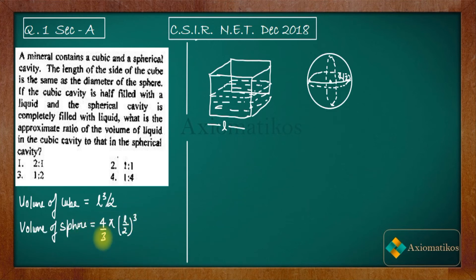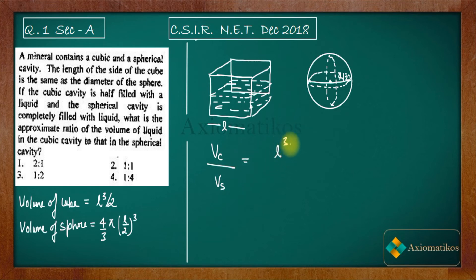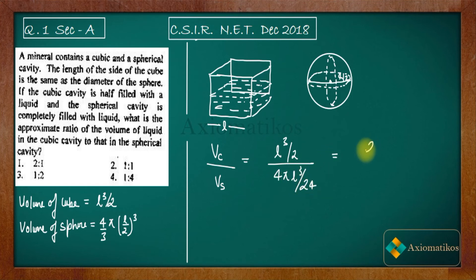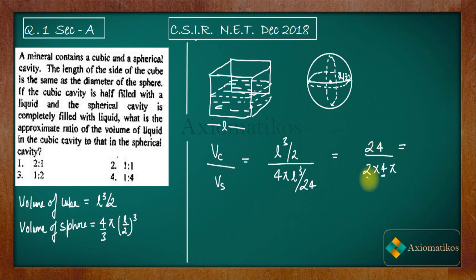We need to find the ratio VC to VS. Let VC be the volume in the cubic cavity and VS be the volume in the spherical cavity. So the ratio is (l³/2) divided by (4π(l/2)³/3). Expanding (l/2)³ gives l³/8, so the denominator becomes 4πl³/24. The l³ terms cancel, giving us 24 divided by (2 × 4π), which equals 24/(8π) = 3/π.